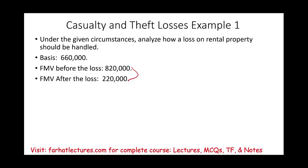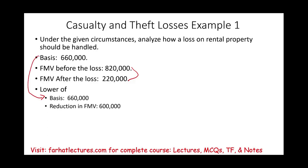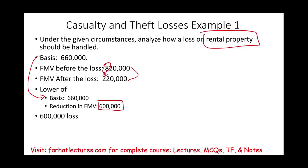We are going to choose the lower of the basis, which is $660,000, and the reduction in fair market value. The property went from $820,000 to $220,000 — a reduction of $600,000. Which of the two do we choose? $600,000. Can we take this deduction? Yes. This is a rental property, and this is a deduction for AGI.